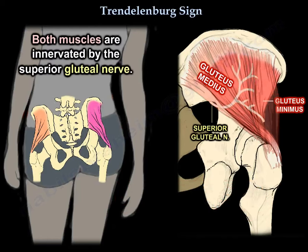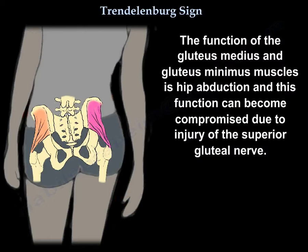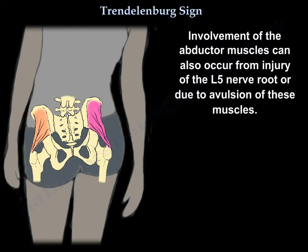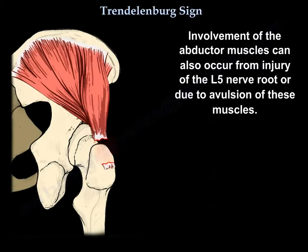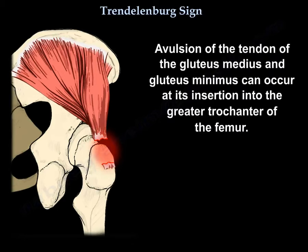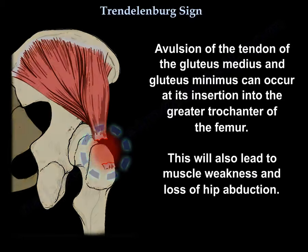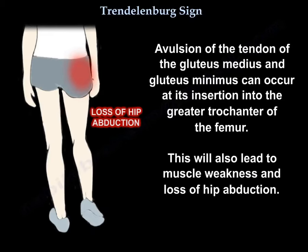Both muscles are innervated by the superior gluteal nerve. The function of the gluteus medius and minimus is hip abduction, and this function can become compromised due to injury of the superior gluteal nerve. Involvement of the abductor muscle can also occur from injury to the L5 nerve root, or due to avulsion of these muscles at their insertion into the greater trochanter of the femur, which will also lead to muscle weakness and loss of hip abduction.